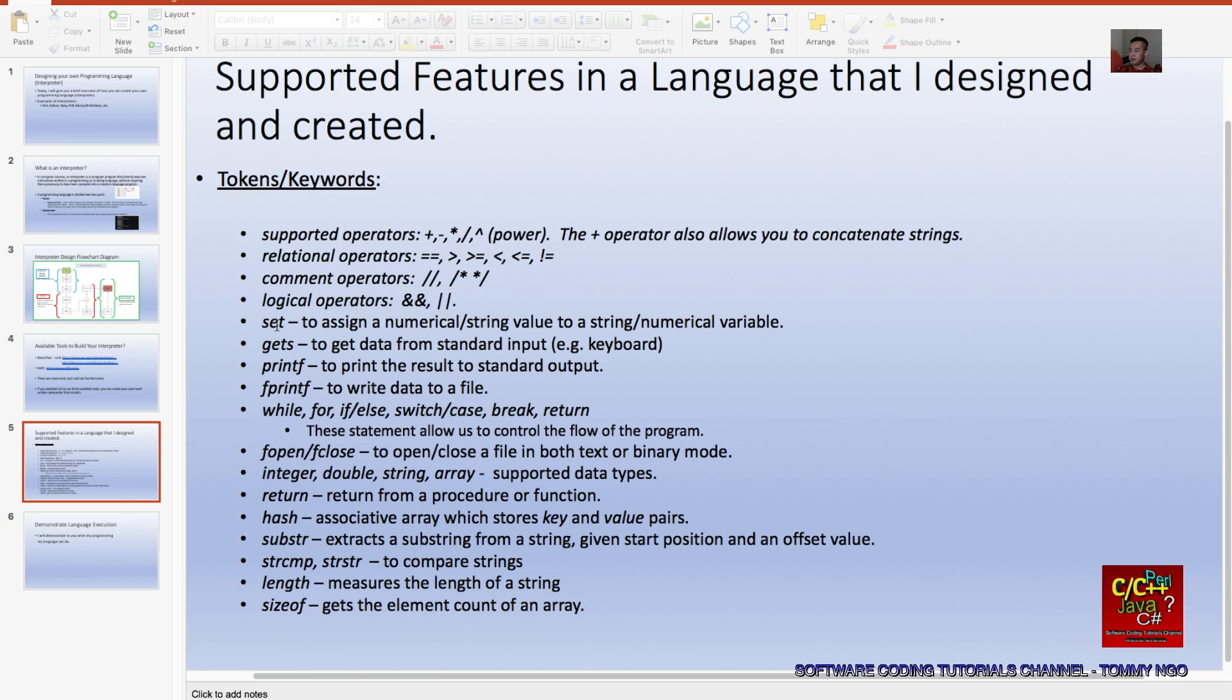For example, these keywords allow you to set or assign a numerical string value to a string or numerical variable. Gets allows you to get the standard input from the keyboard. Here's printf, which is similar to the C function to print the result to standard output. Fprintf allows you to write data to a file. Here are the control statements: while, for, if, else, switch case, break and return. This allows you to control your program.